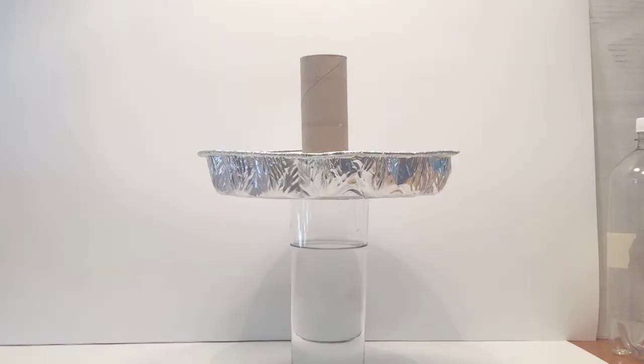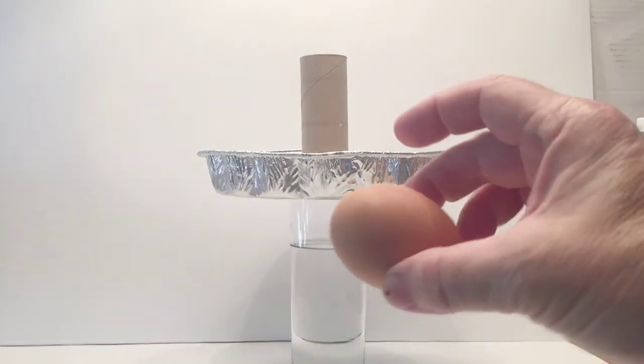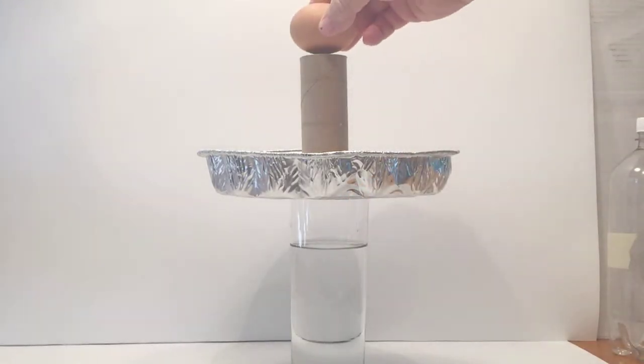For setup, you're going to fill your glass about three quarters of the way full, put your pie tin on top, and then your tube directly above the glass with the egg on its side.